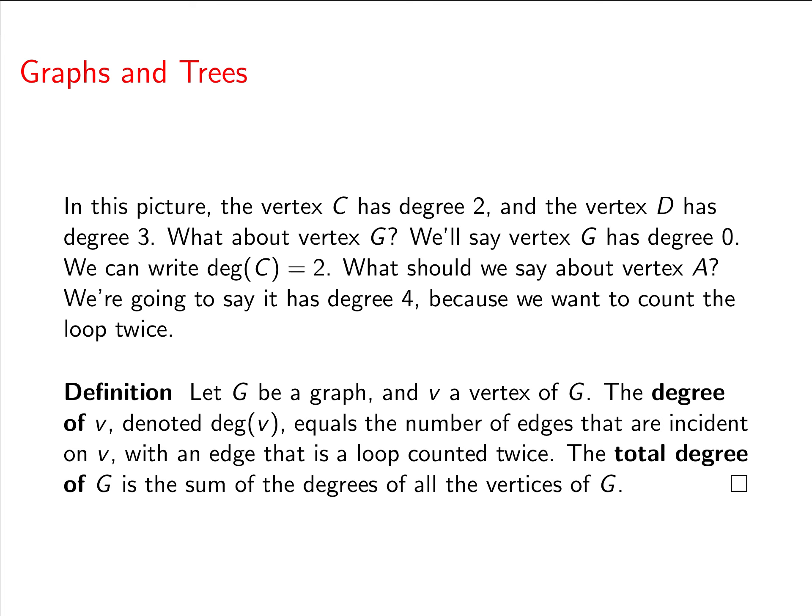All right, let's make a definition. Let G be a graph and V be a vertex of G. The degree of V, denoted deg(V), equals the number of edges that are incident on V, with an edge that is a loop counted twice. And then the total degree of a graph is the sum of all the degrees of the vertices.